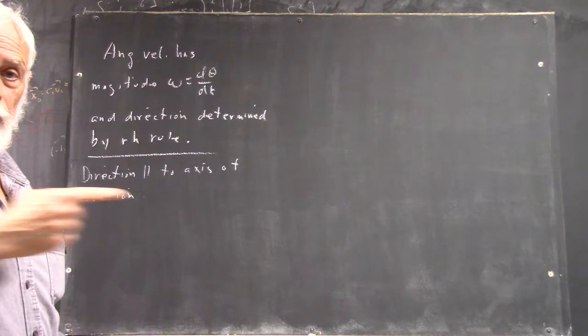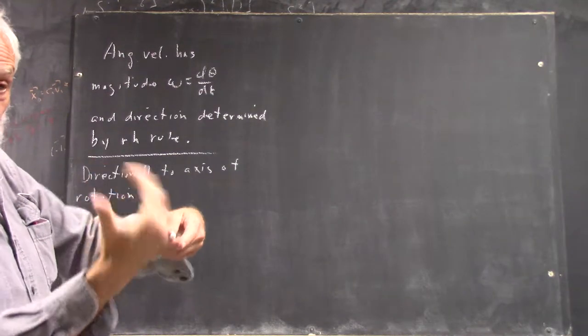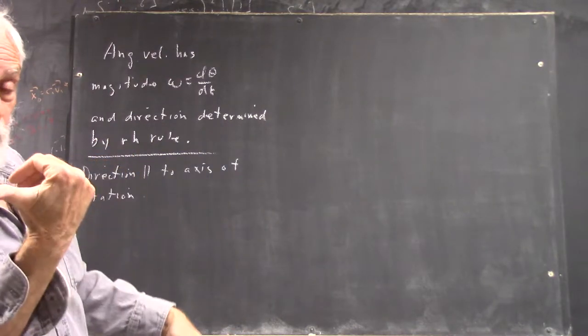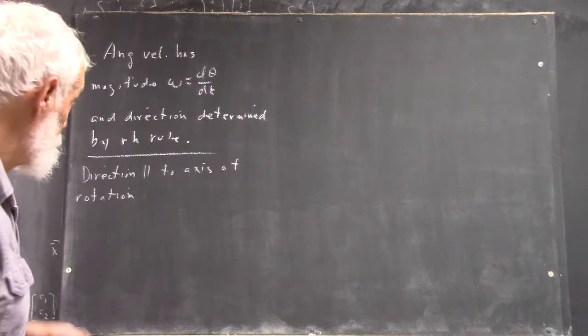And which way, this way or this way, if the axis is in this direction, depends on what the right-hand rule tells you. If it was rotating like this, it would be here. If it's rotating like this, it's here with your right hand, right?